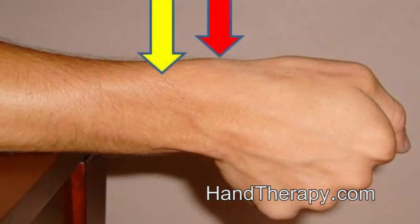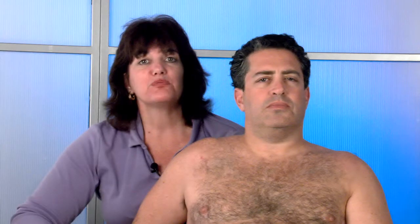Now if we look at the hand, the red arrow is going to show you DeQuervain's where the yellow arrow is showing you intersection syndrome. Sometimes being that close together, you will have to position the arm or the wrist in the appropriate exposure of the targeted tissue, and in this case it would be ulnar deviation.